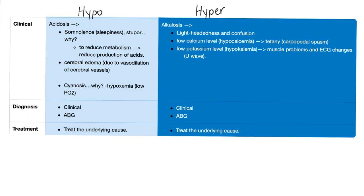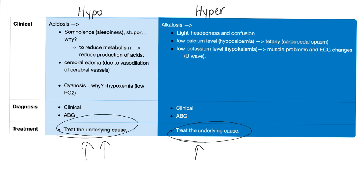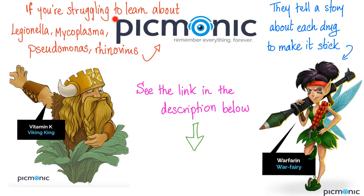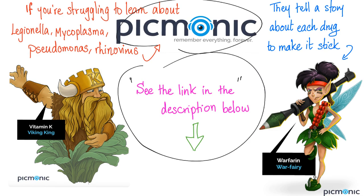How to diagnose acidosis and alkalosis: clinically and with ABG. How to diagnose respiratory alkalosis: clinically and with ABG. Treatment: don't focus on treating the imbalance until you find and treat the underlying cause. If you are struggling to learn about bacteria like Legionella, Mycoplasma, Pseudomonas, rhinovirus, Staph, Strep, E. coli — check out the website called Picmonic; the link is in the description below. These are animated visual mnemonics.